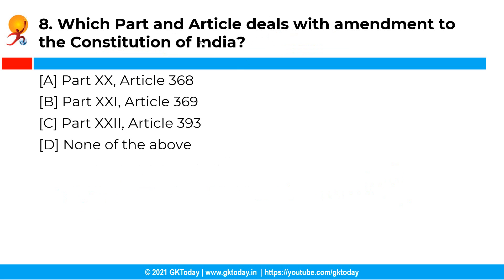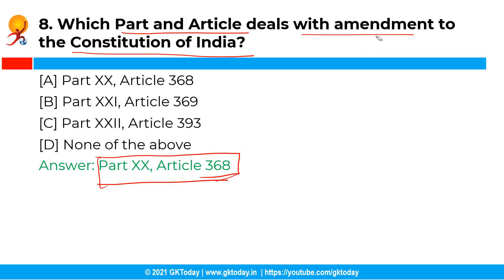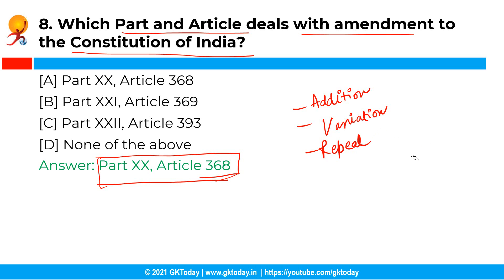The next question is: which part and article deals with amendment to the constitution? The correct answer is option A — Part 20, Article 368. The powers of parliament to amend the constitution and its procedure are enumerated in Article 368 in Part 20 of the constitution. It states that parliament may amend by way of addition, variation, or repeal any provisions of the constitution in accordance with the procedure laid down for the purpose.